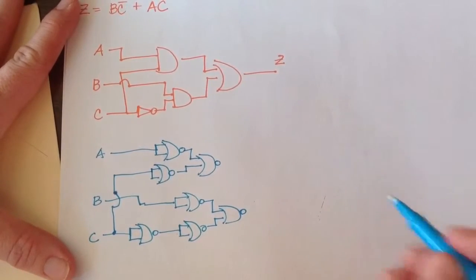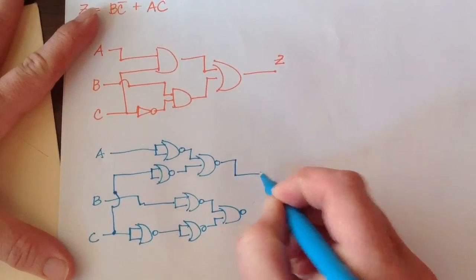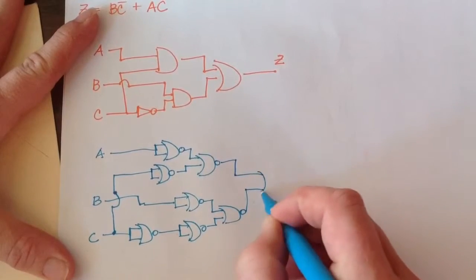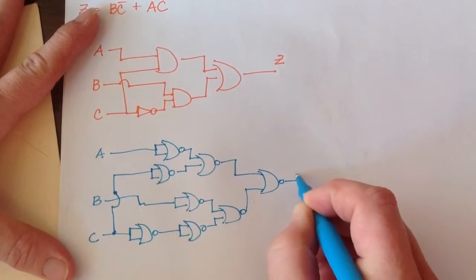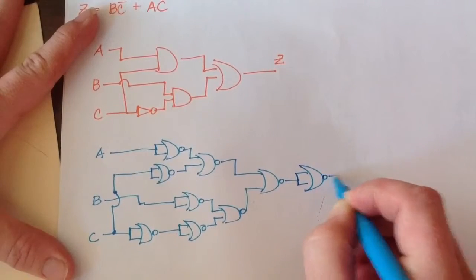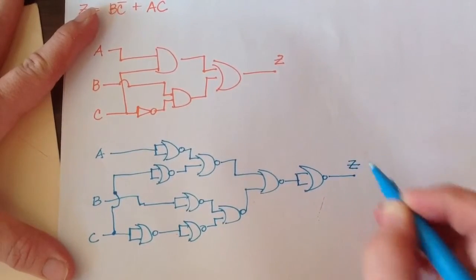So now we need to OR these two pieces together. And that requires two NOR gates. And that gives us our output Z.